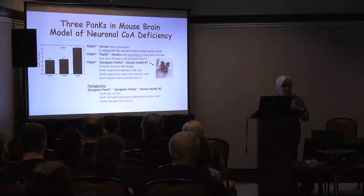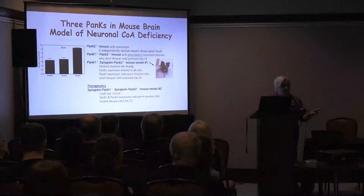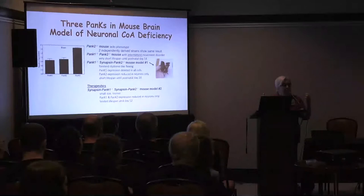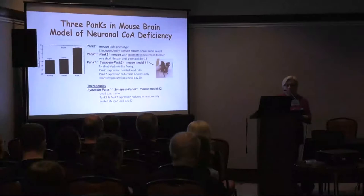Those mice actually died very young because PAN-K1 is really important in the liver — PAN-K1 and coenzyme A abundance are necessary to maintain glucose levels during fasting. Those mice died within two weeks, but actually they had an intermittent movement disorder just before they died. It was transient, not persistent — similar to some of the patients' characteristics.